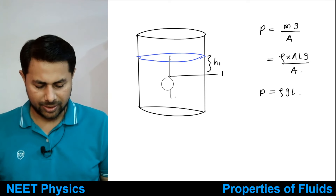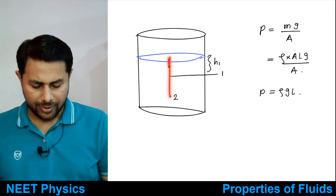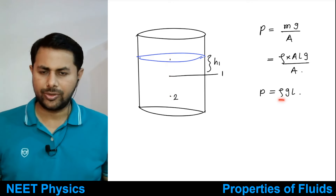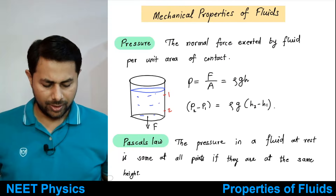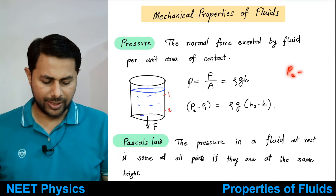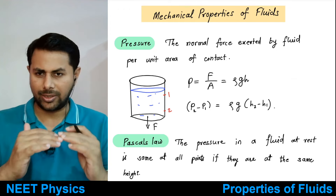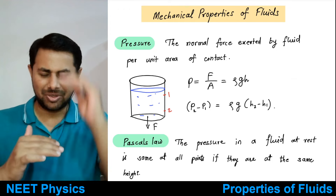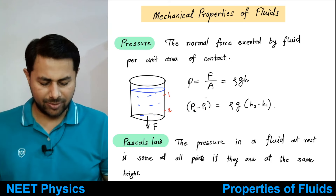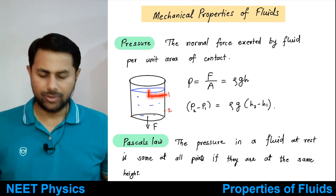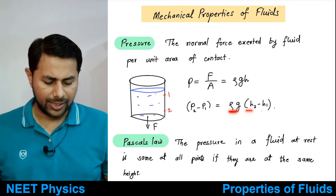Pressure at point 2 — if you take some point over here — that is point 2. Then the pressure over there would be equal to rho g multiplied by the height of the liquid column above it, h2. So P2 equals rho g times h2, and P1 equals rho g times h1. Therefore, P2 minus P1 would be equal to rho g h2 minus rho g h1, that is rho g times (h2 minus h1).